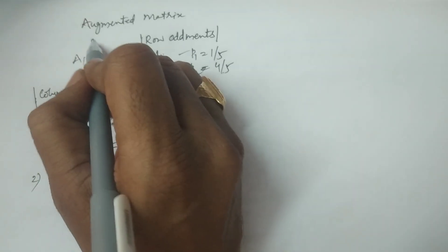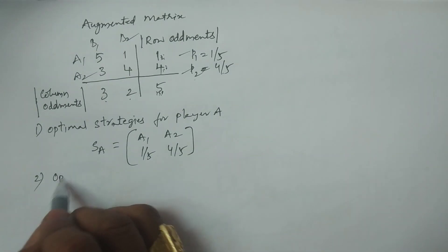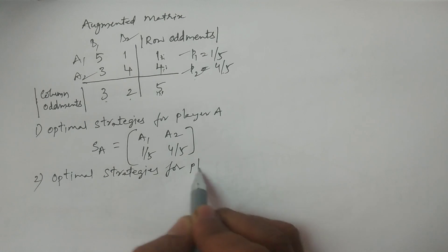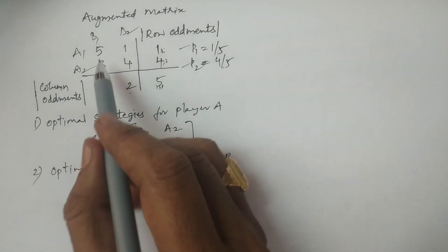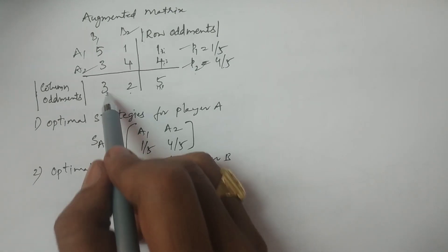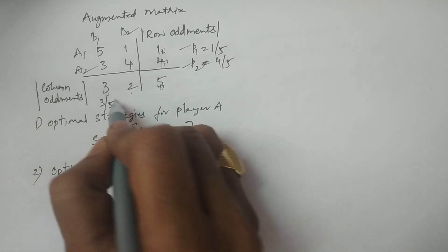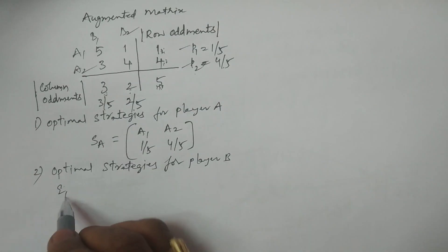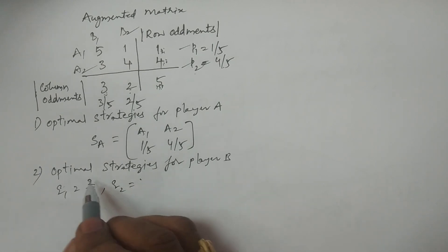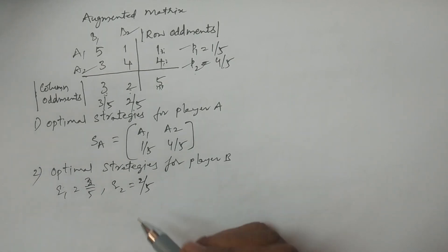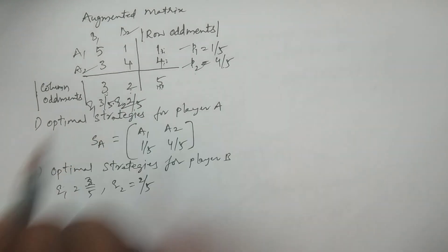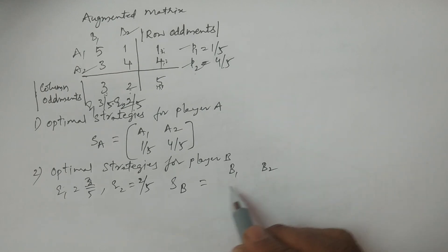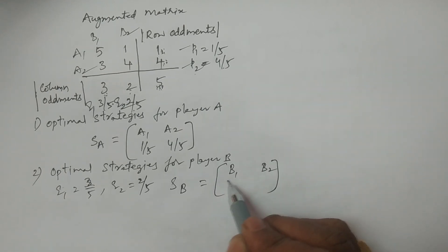The column oddments will give strategies for Player B: B1 and B2. Q1 and Q2 are calculated from column oddments. R1 = -3, |R1| = 3, so Q1 = 3/5. R2 = 2, |R2| = 2, so Q2 = 2/5. Therefore Q1 = 3/5 and Q2 = 2/5. The optimal strategy for Player B: SB = (B1, B2) with probabilities Q1 = 3/5, Q2 = 2/5.